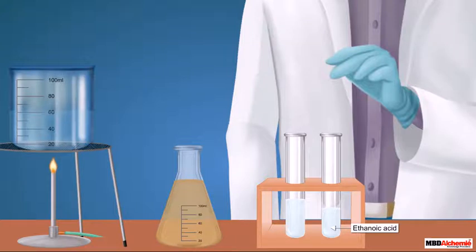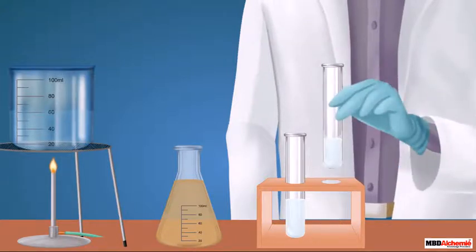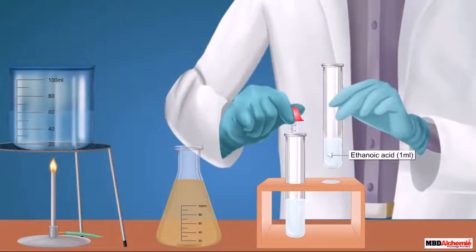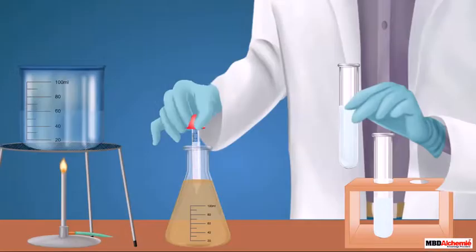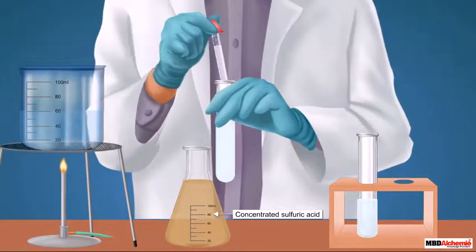Let us now move to the chemical properties of ethanoic acid. For this, let us do some experiments. Shown here is a test tube having 1 milliliter of ethanoic acid. To this, let us add an equal amount of ethanol and a few drops of concentrated sulfuric acid.